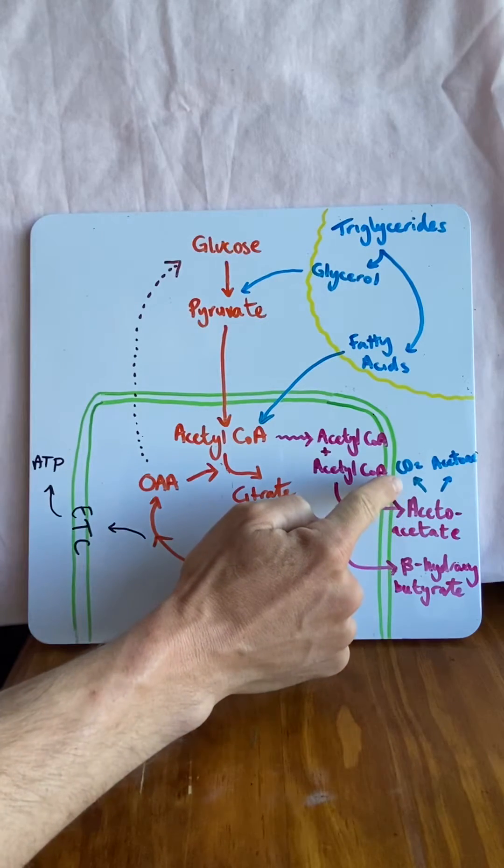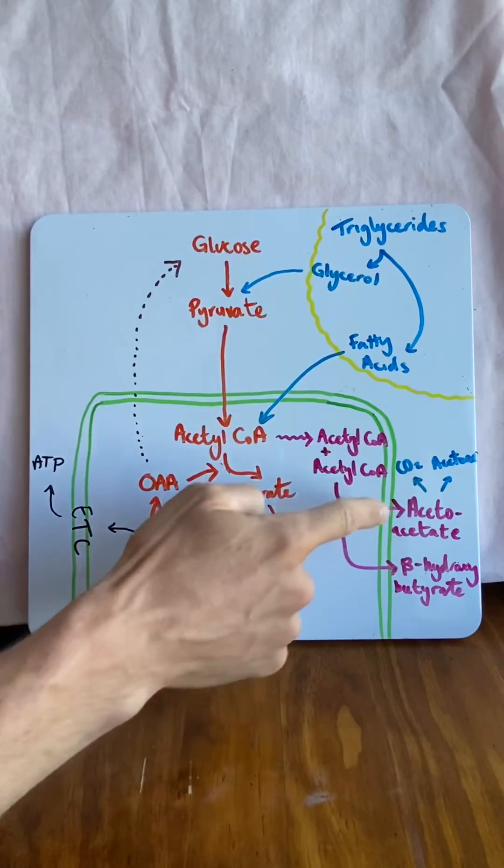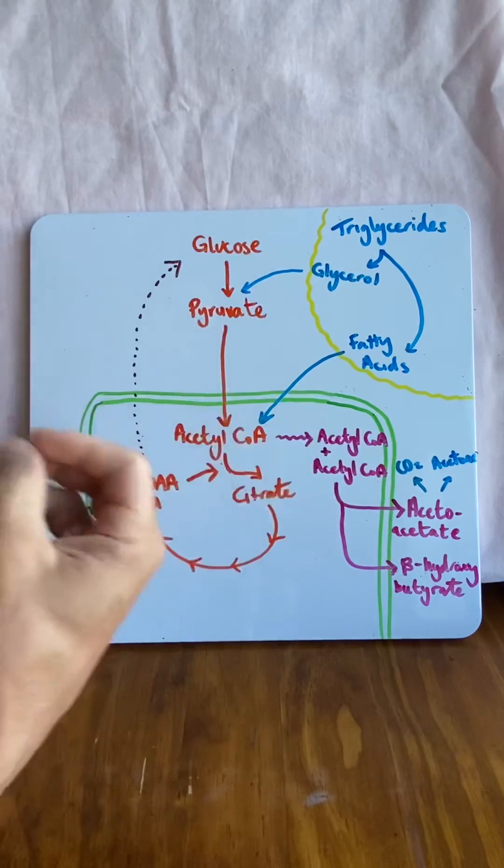Acetoacetate will break down into carbon dioxide, and we know if there's too much carbon dioxide it can be acidic, not good for diabetics, and acetone, which has a sweet smell on the breath.